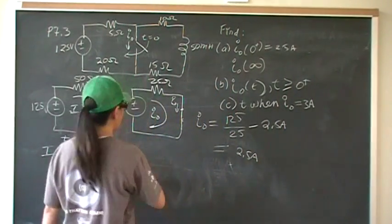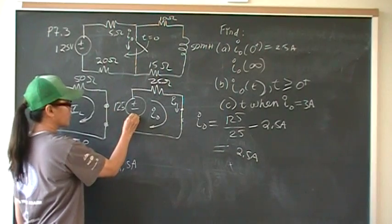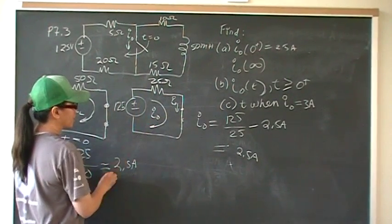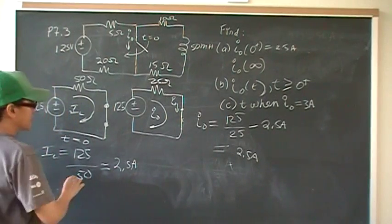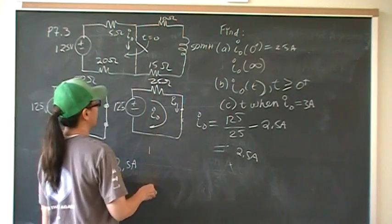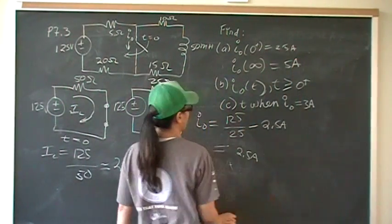But as this goes on to infinity, we have an ideal voltage source that holds this voltage no matter what. But this will get, the current will go back to its DC steady state current. And that's just going to be 125 over 25. And that will be 5 amps.